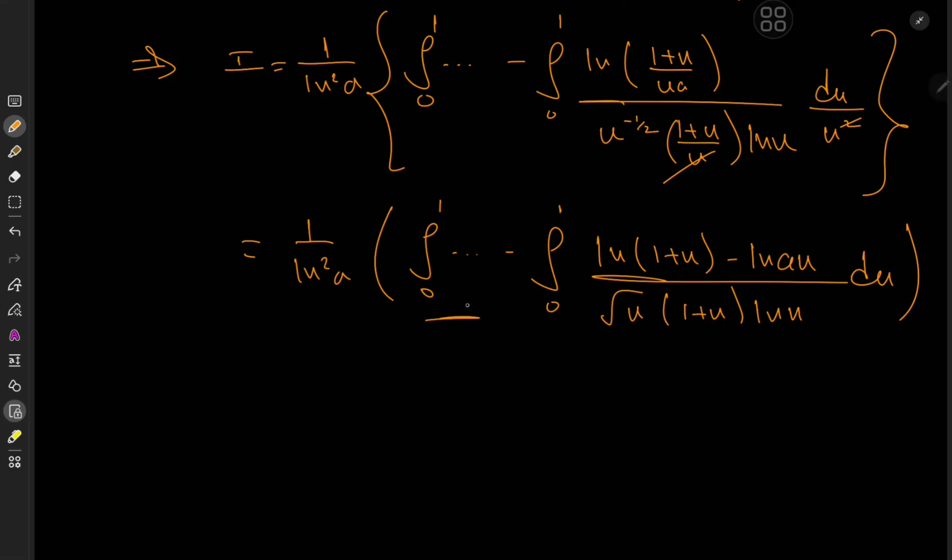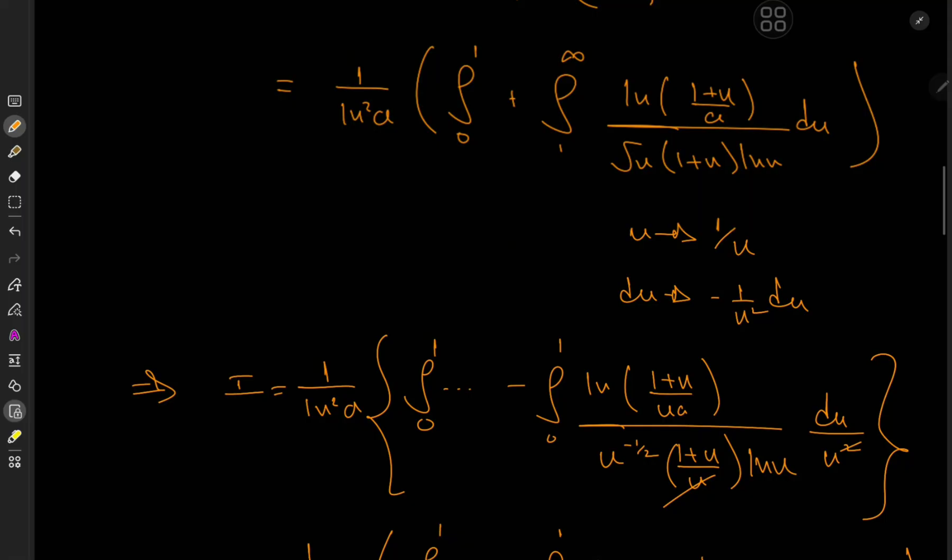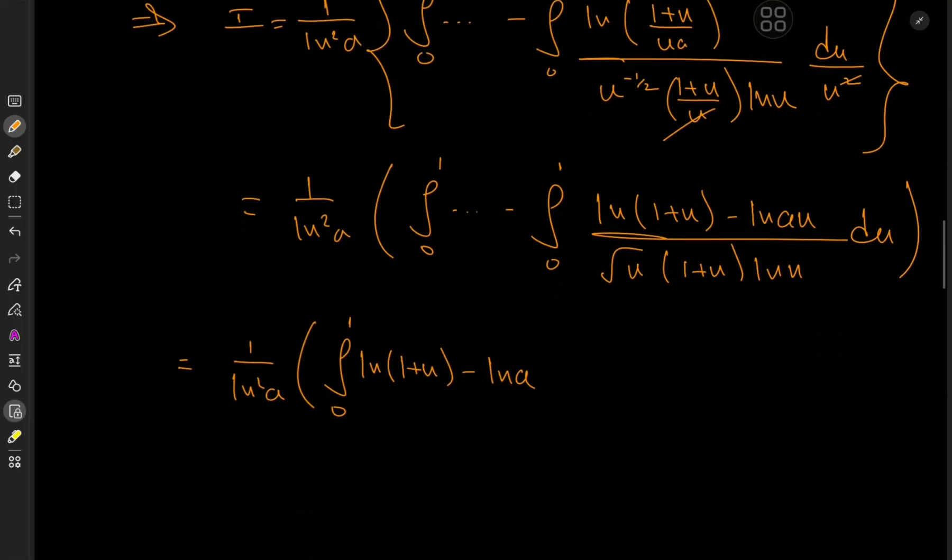Okay, cool. So let me write out the integral of the stuff that we had before to see some nice cancellations. So 1 over log squared a, and we have integral 0 to 1 of log of (1 + u) minus log(a) over root u times (1 + u) times log(u) du minus the integral from 0 to 1, log of (1 + u) minus log(a) minus log(u). Oh, hell yeah, we cooking now. So we have (1 + u) again, log(u) and du.